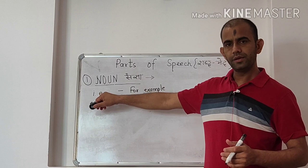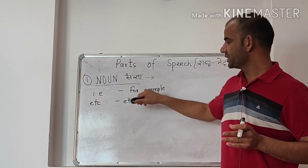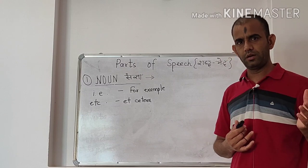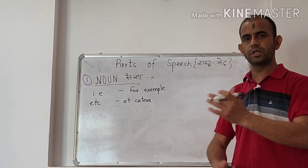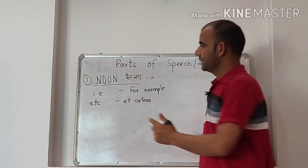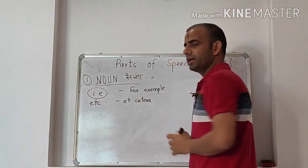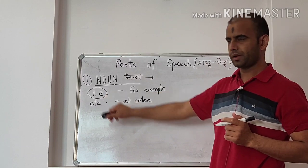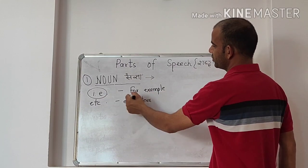First is IE, it means for example. Where we give a new type of example before a rule or after a rule, we show it by IE, for example.